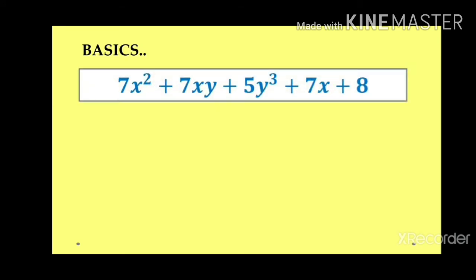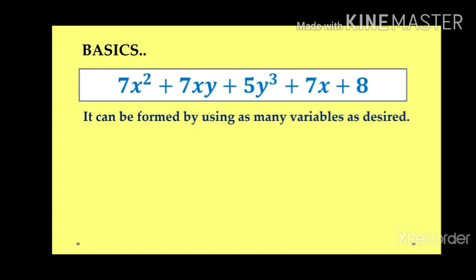Let us go through some basics. Let us take the expression 7x² + 7xy + 5y³ + 7x + 8. Here you can see that we can use as many variables as desired — it is not that only one variable x will be used. We can use as many variables as we need. Here we have used two variables: x and y. We can use x, y, z, a, b, c — anything. Any number of variables can be used in one expression.